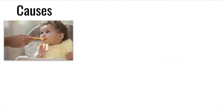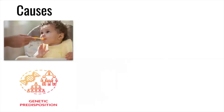Celiac disease is typically introduced in childhood, but can develop as an adult after eating foods or taking medicine containing gluten. Early diagnosis can lower chances of developing other conditions such as type 1 diabetes, thyroid disease, anemia, or infertility. It's mainly caused by a genetic predisposition — people with a parent, child, or sibling with celiac disease possess a 1 in 10 risk.